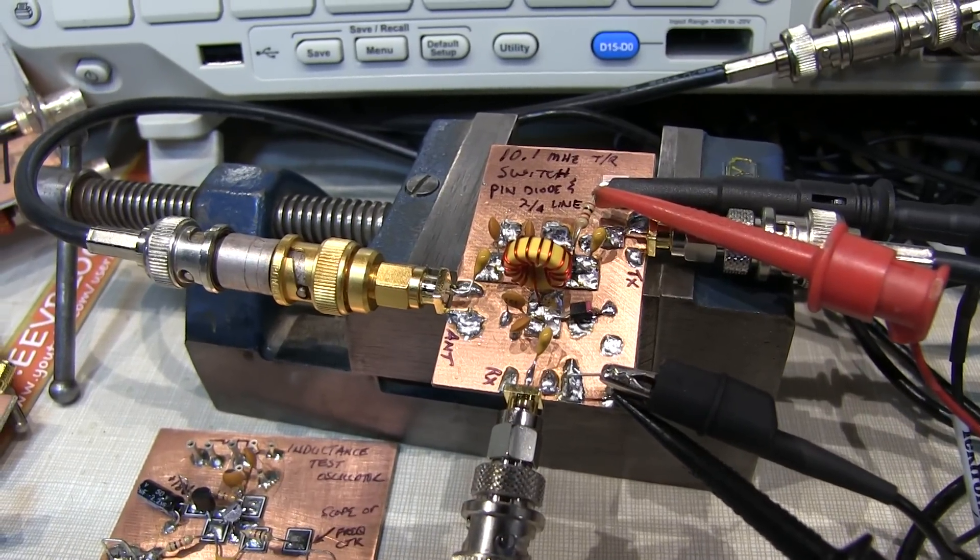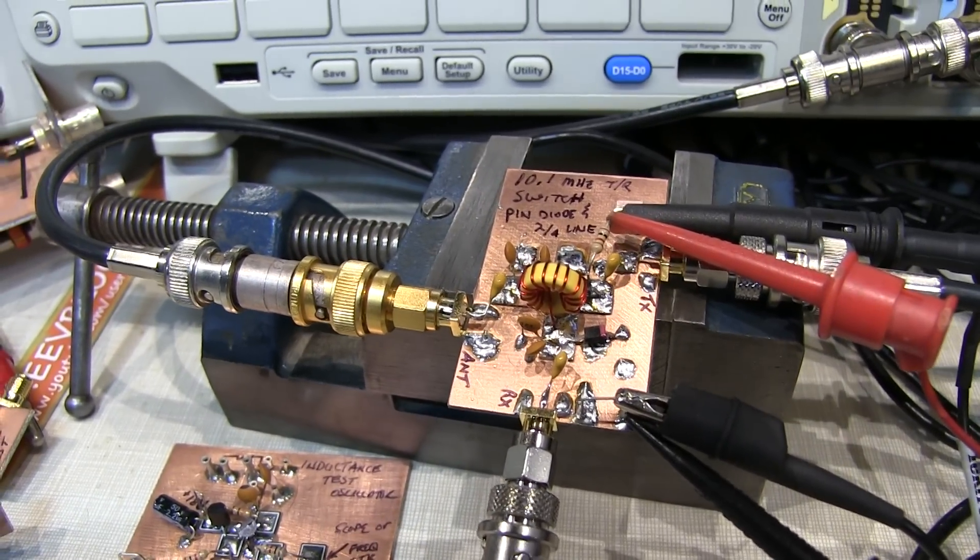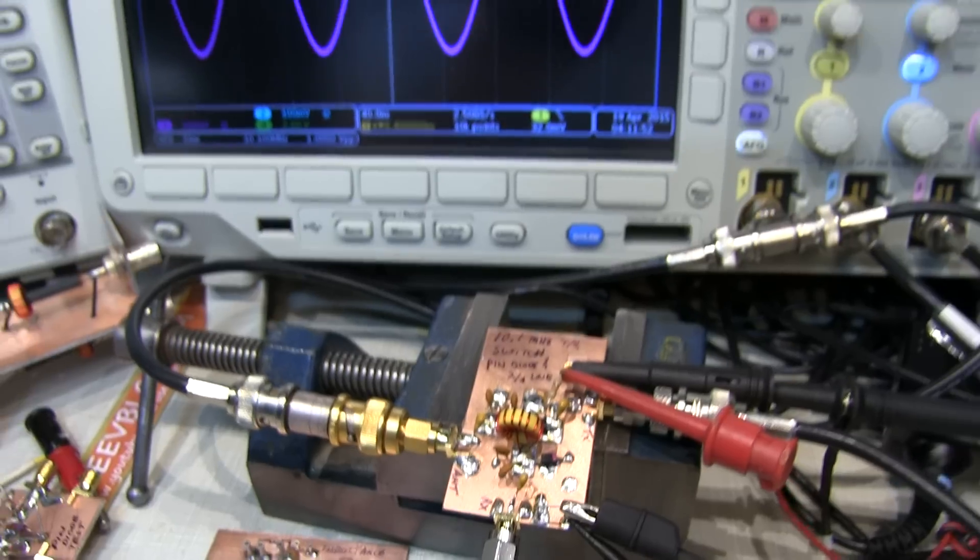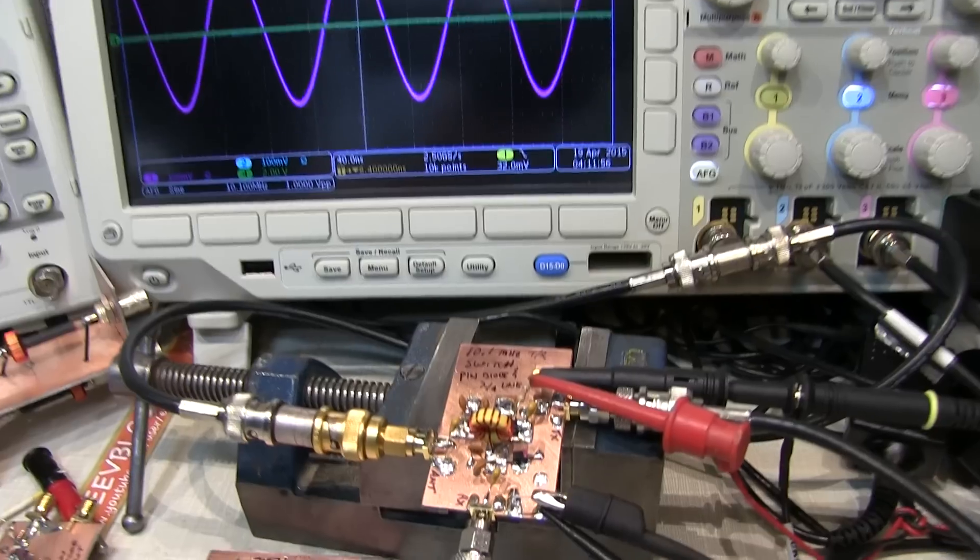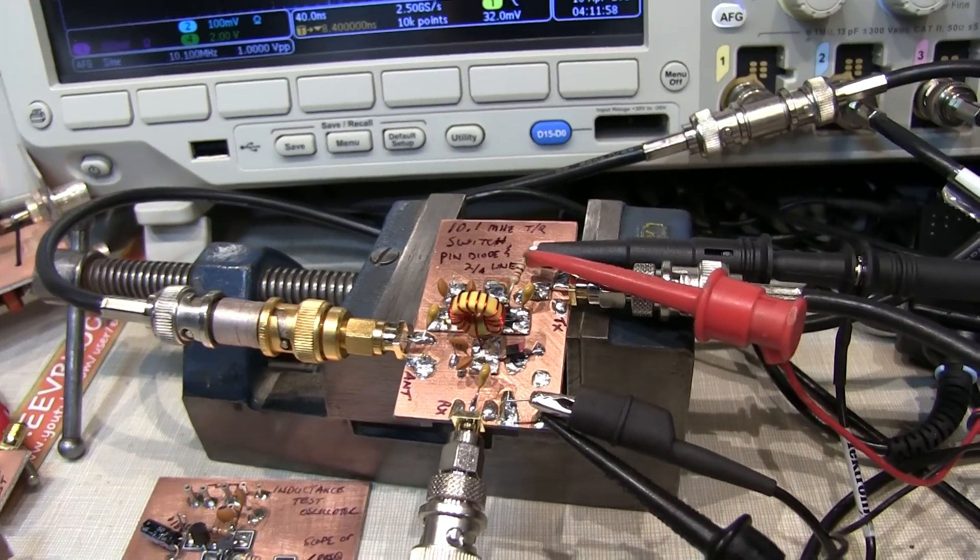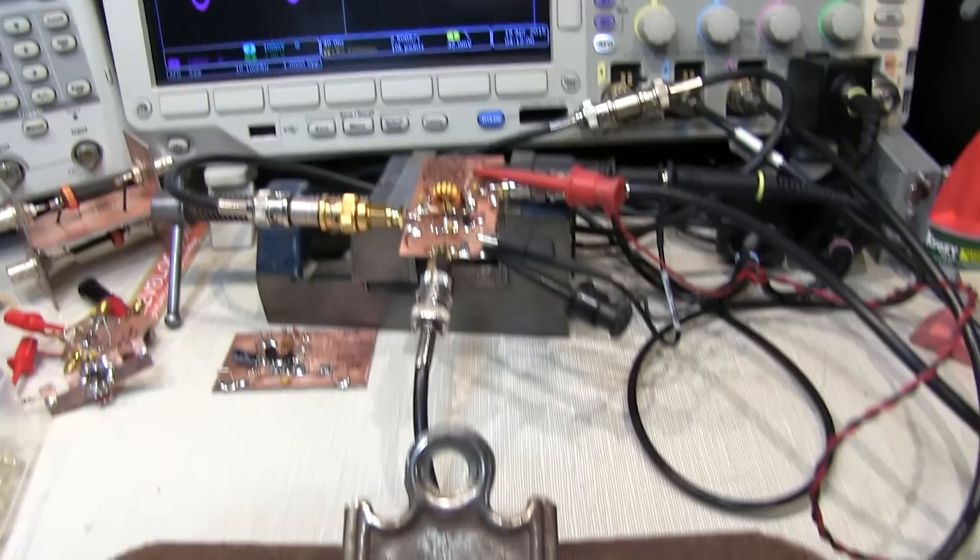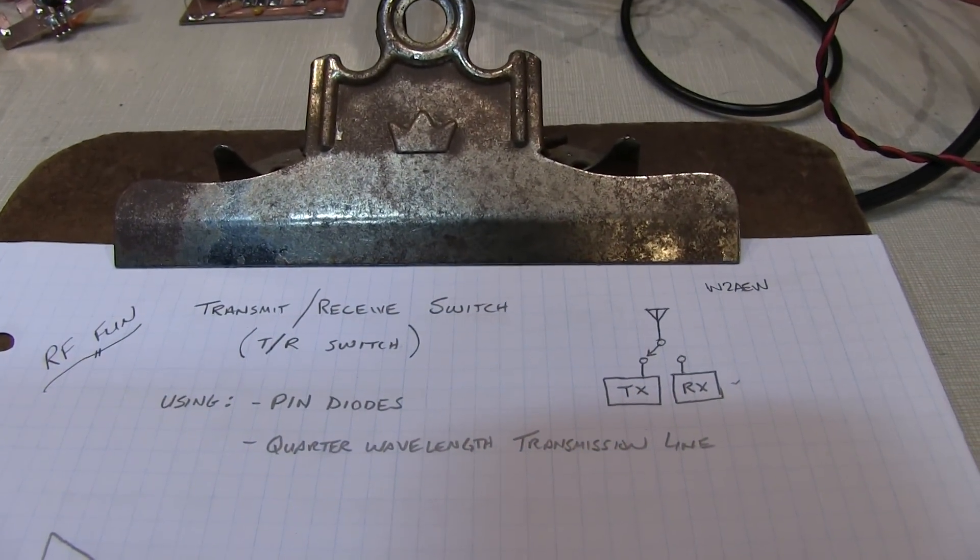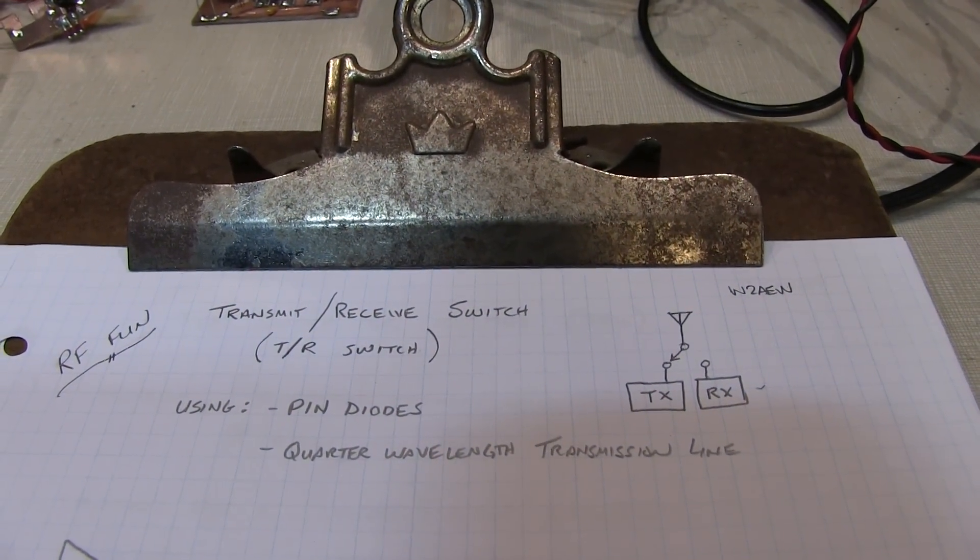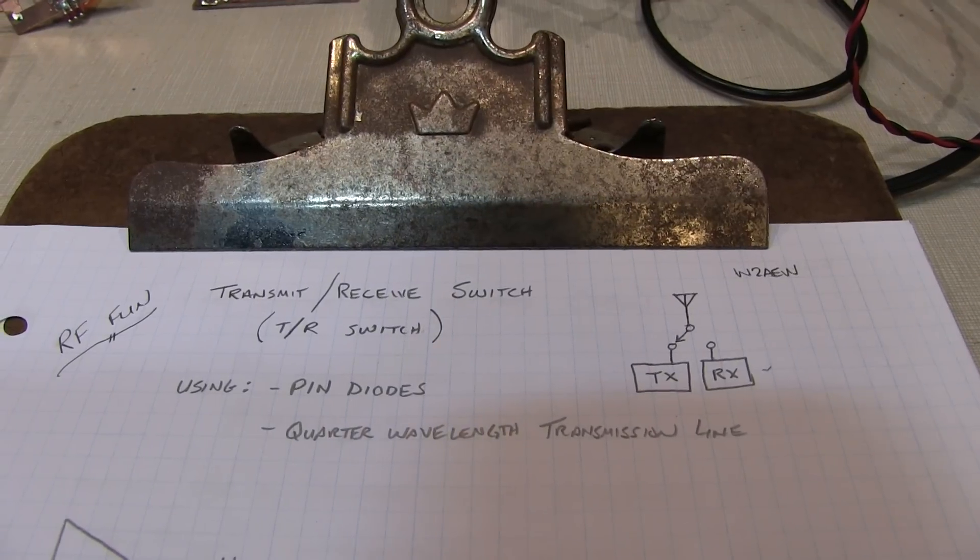Today's video is going to talk about a TR switch, or a transmit-receive switch. It's really just an electronic single-pole double-throw switch that's used to switch an antenna between a transmitter circuit and a receiver circuit. This one we're going to do electronically using pin diodes and a quarter-wavelength transmission line. So let's go have some RF fun and see how this works.